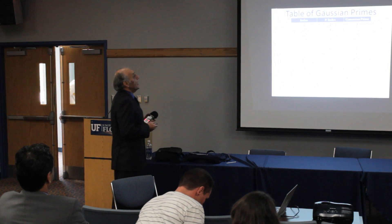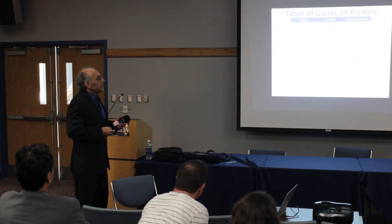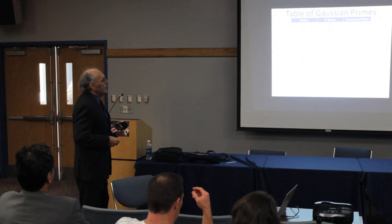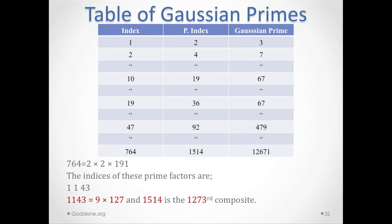Again we have to tabulate these primes — we can't just guess. The table shows the index of the prime number alongside the Gaussian prime. There are far fewer Gaussian primes than regular primes. For example, the 19th Gaussian prime is 67.